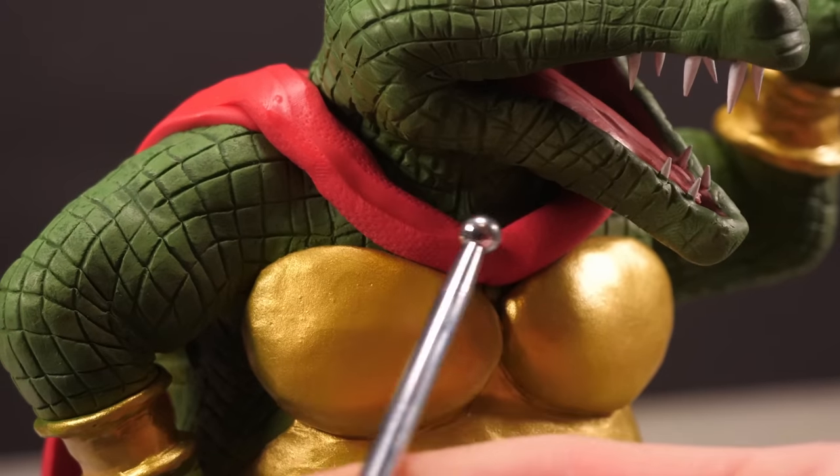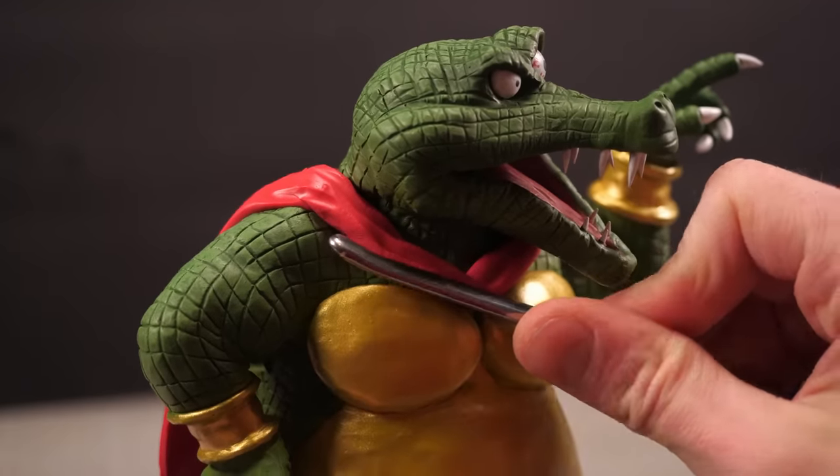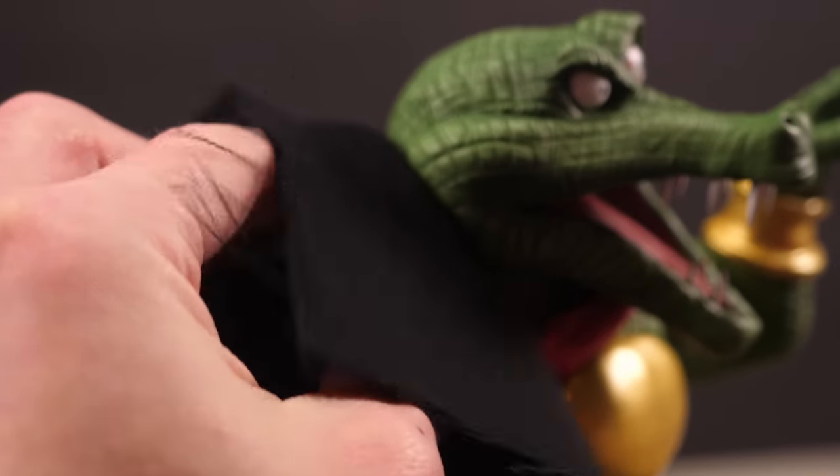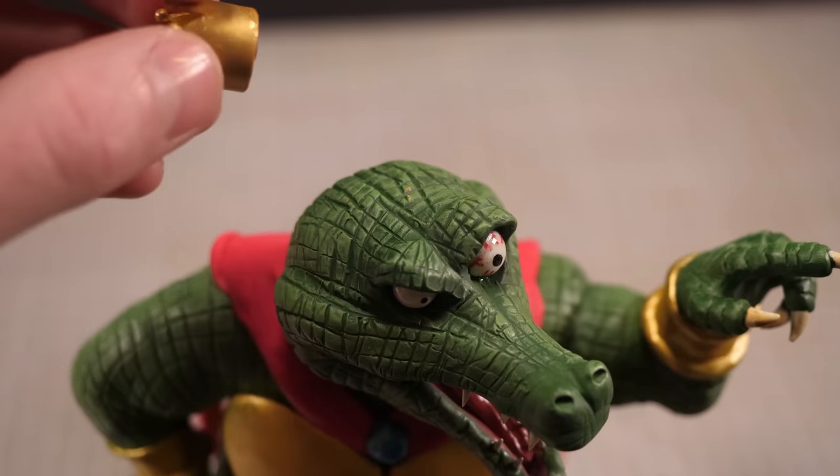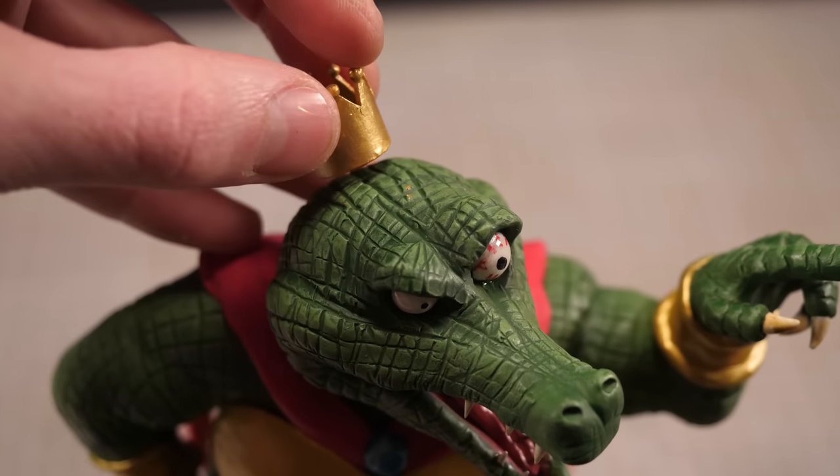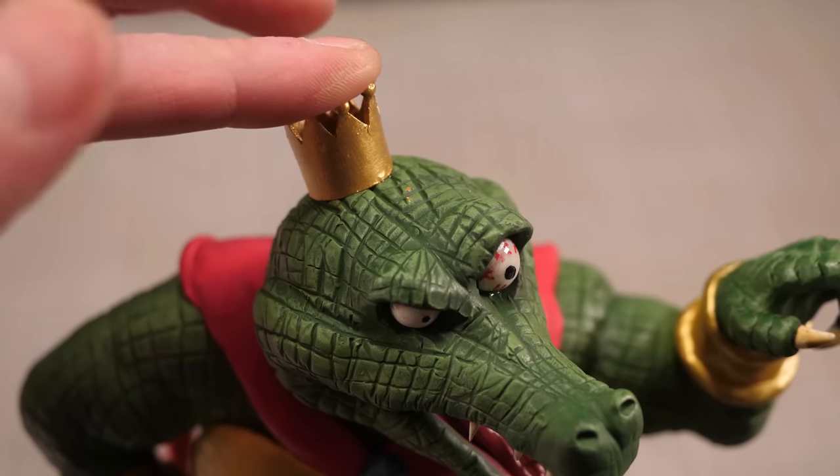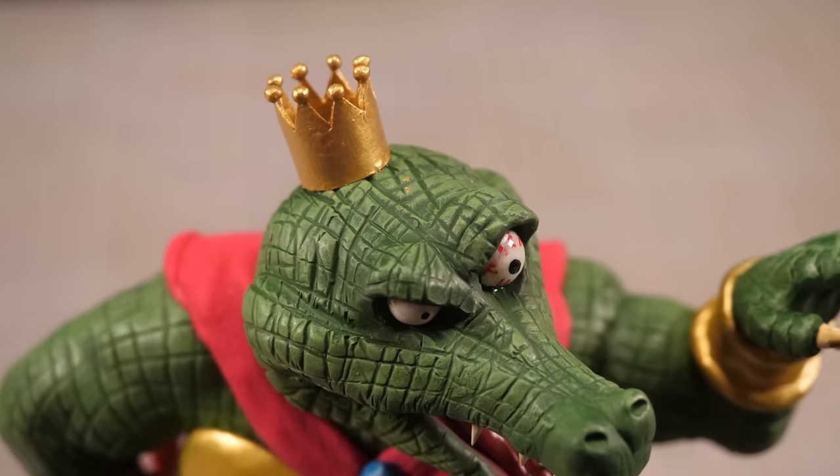Now I did add a blue crystal off camera when I realized I'd forgotten it but otherwise the only thing left to do is turn this commoner K. Rool into a king K. Rool by adding a tiny golden crown. With that I've now got my hero and my villain but I need something for them to stand on.